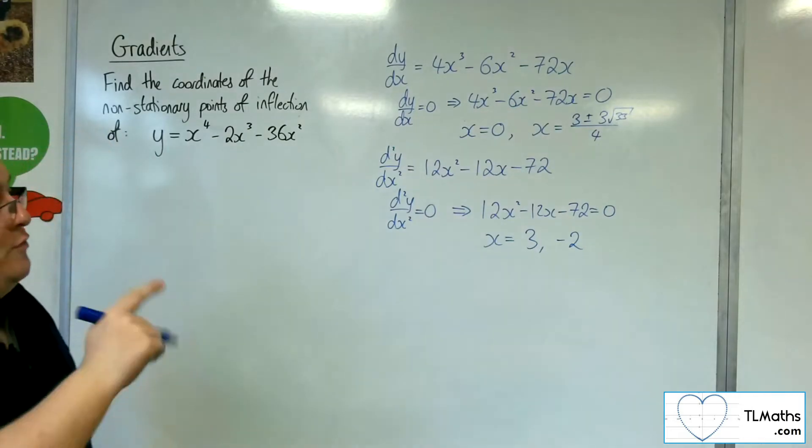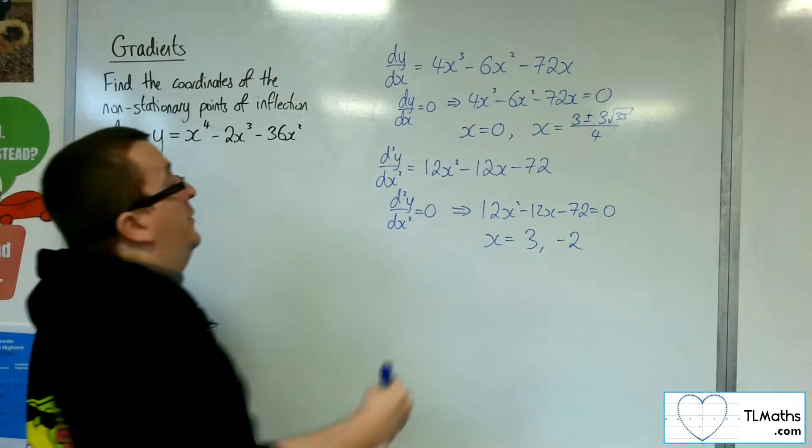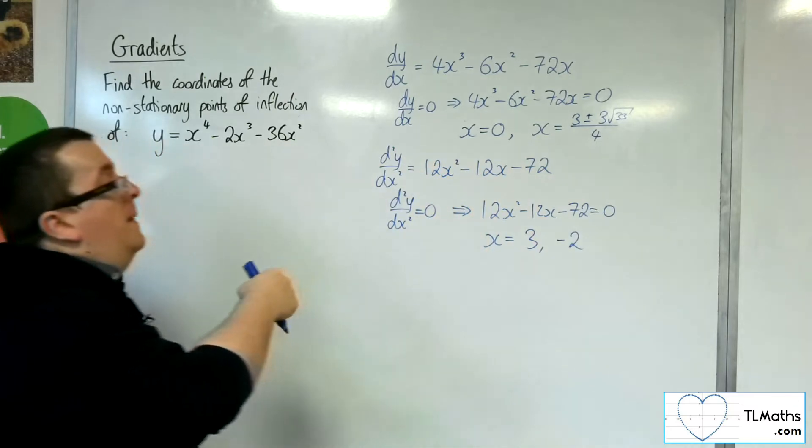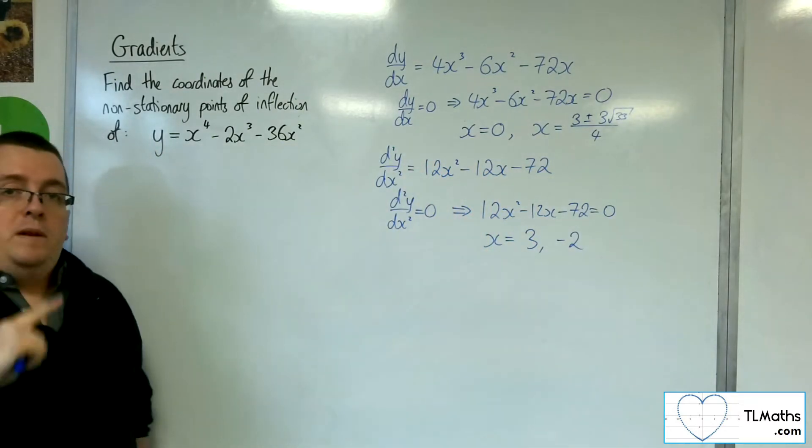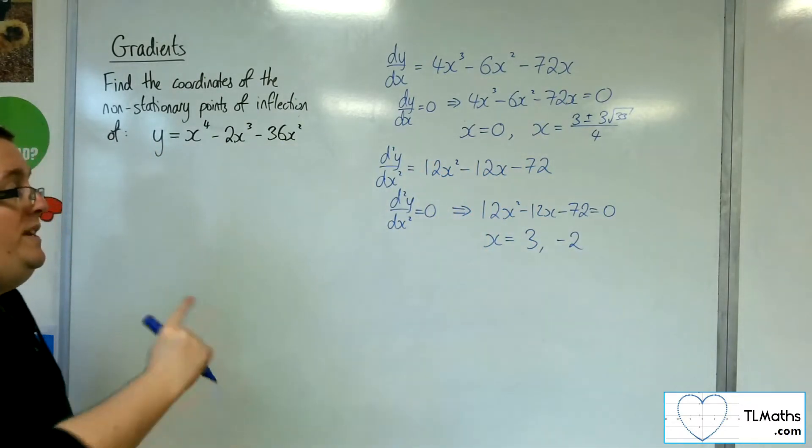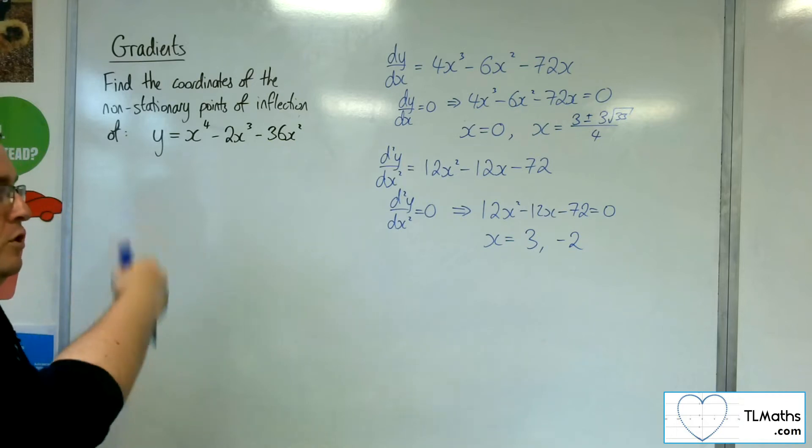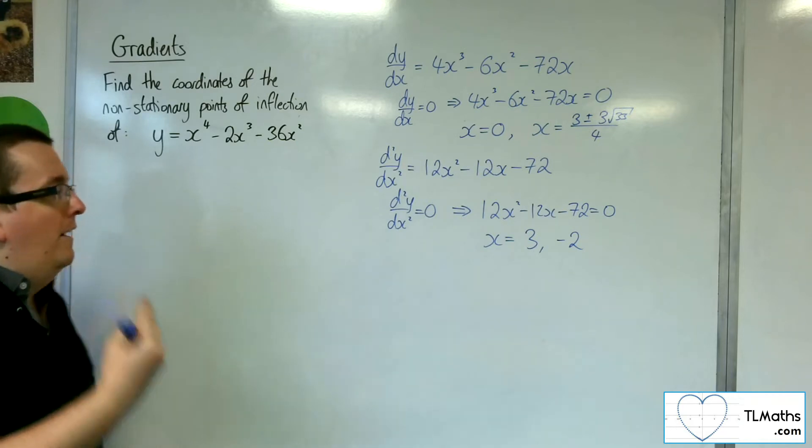So 3 and minus 2 are definitely not stationary points. So they may be points of inflection. We need to double check that they are going from concave to convex or vice versa, either side of the point.